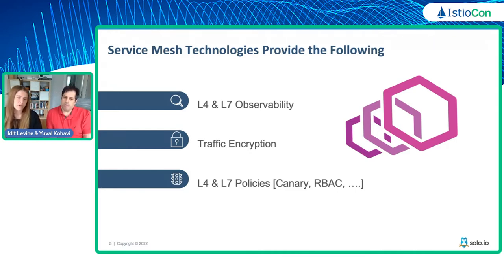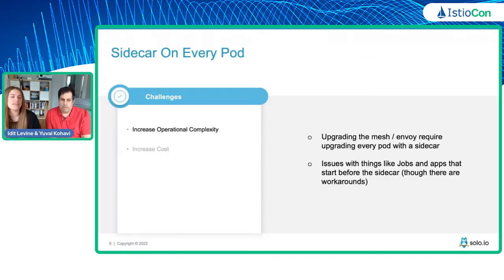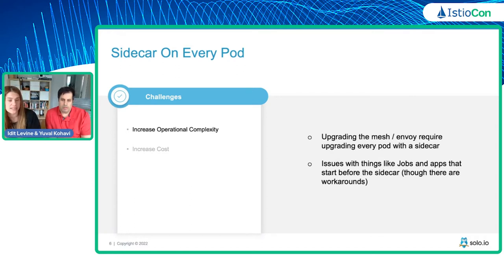A lot of that functionality is powered by Envoy, which is very important — because the question is: do we need it? If it's doing a lot of things, we need to figure out if we're going to do it differently. So let's figure out if there is any problem with that approach. There are two problems we recognize with the sidecar approach: one is operational complexity, and the other is cost.